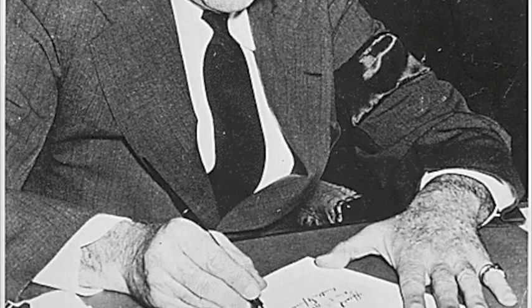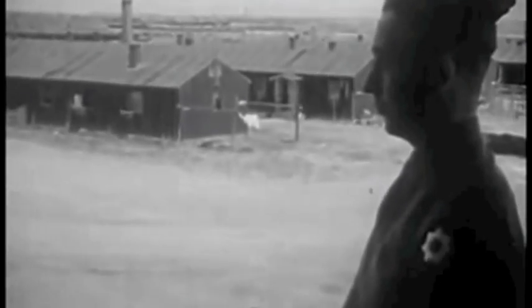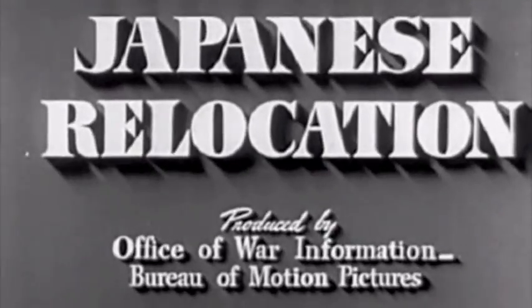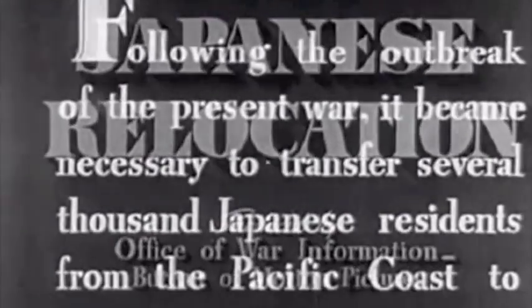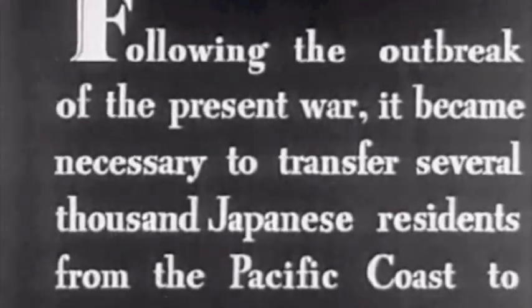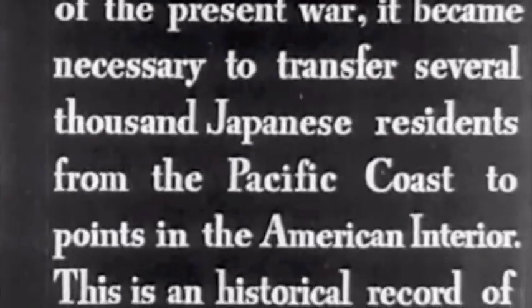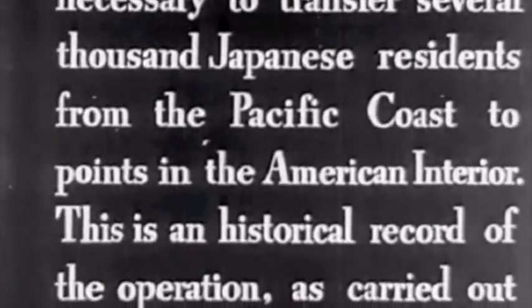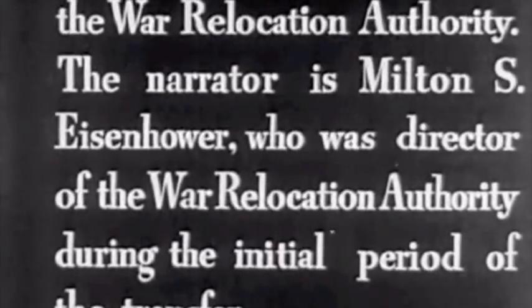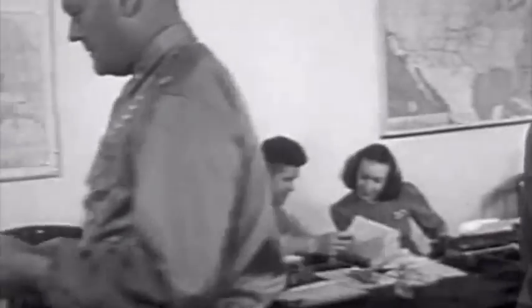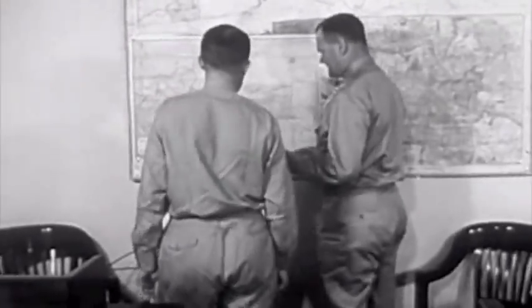They didn't have to say you stole something or you were disloyal to the country. They just took us based on the possibility that we might do something — just like going up to someone and saying, I'm going to arrest you before you can do something wrong. Well, that's absolutely against constitutional law. How can you predict what someone might do?